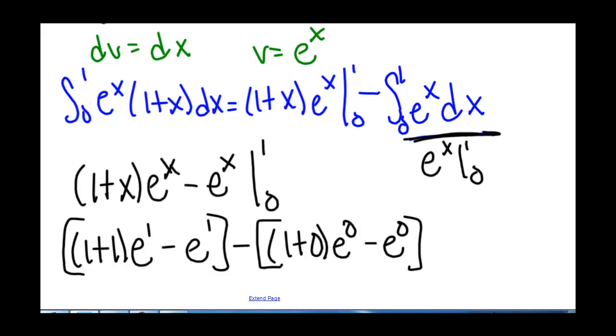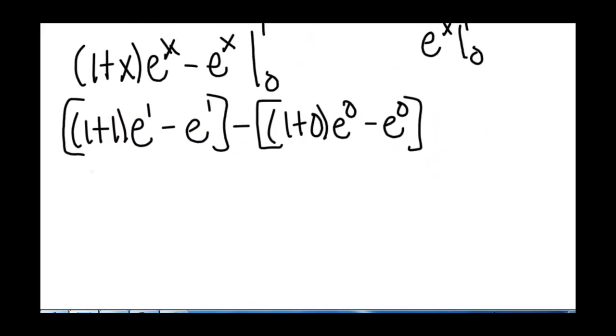So we get 2 times e minus e minus, we'll leave this as a quantity for now. 1 plus 0 is 1.